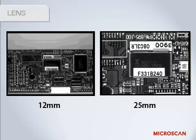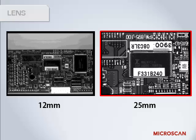Lens choice can dramatically affect the appearance of an image. Here are two examples taken with the same camera using different lenses. The image on the left was taken using a 12mm wide angle lens, which provides a larger field of view and less magnification than the image on the right, which was taken using a 25mm lens. If you use a lens with a longer focal length, you will magnify the image and reduce the field of view.